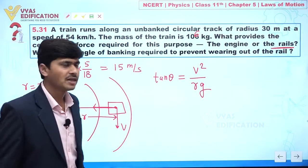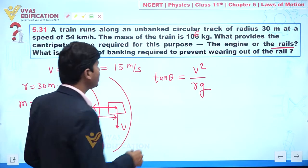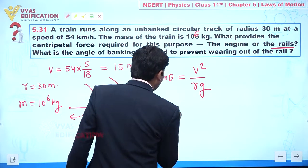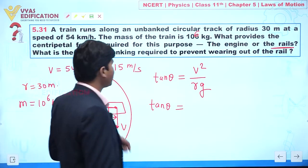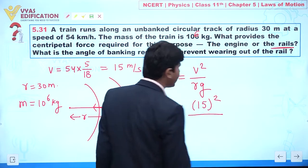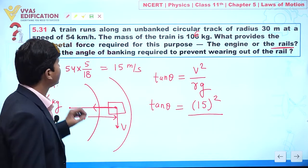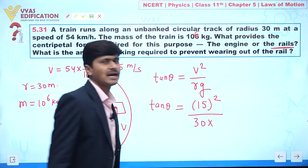From here we can see our objective in this question is to calculate the angle. So the value of V is given, this is 15 meters per second. So we can say this is 15 squared divided by the radius, which is given to you as 30 meters, and it is multiplied with 10.